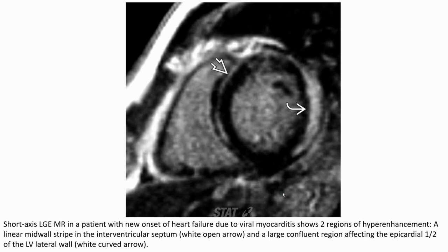Late gadolinium enhancement in a patient with immune-mediated cardiomyopathy due to viral myocarditis shows two regions of hyper-enhancement: a linear mid-wall stripe in the interventricular septum (white open arrow) and a large conglomerate region affecting the lateral half of the left ventricular lateral wall (wide curved arrow).